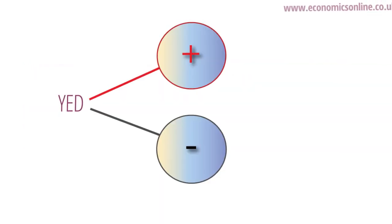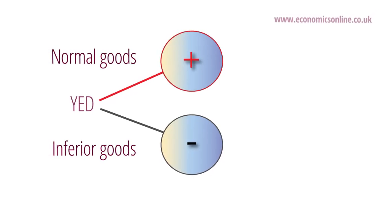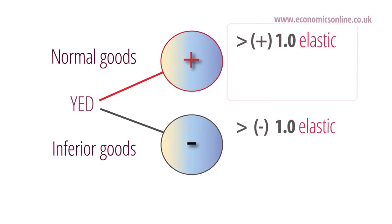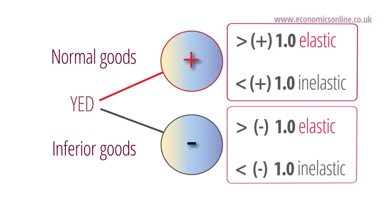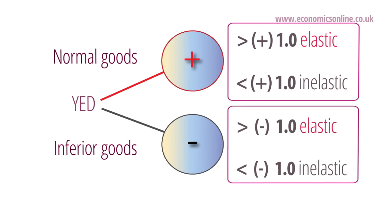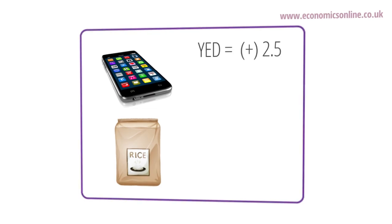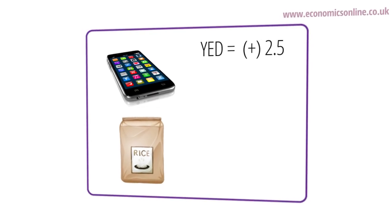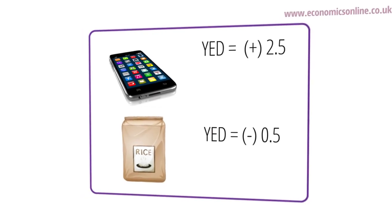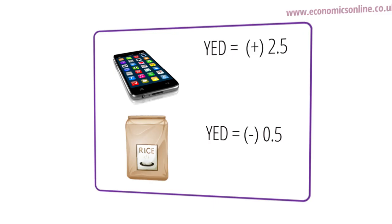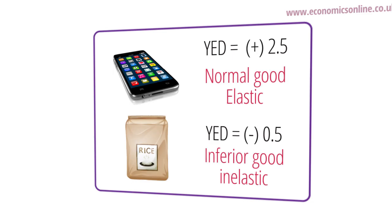It is therefore possible to have both elastic and inelastic normal and inferior goods. For example, if the YED is +2.5 for smartphones and -0.5 for rice, then we can deduce that smartphones are, with respect to income, an elastically demanded normal good, and rice is an inelastically demanded inferior good.